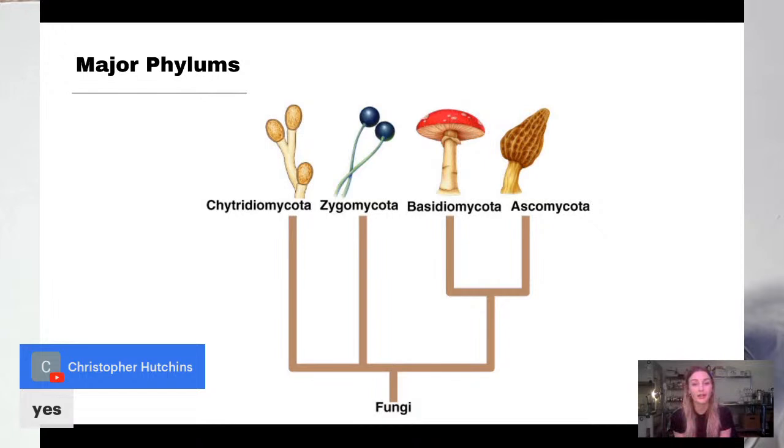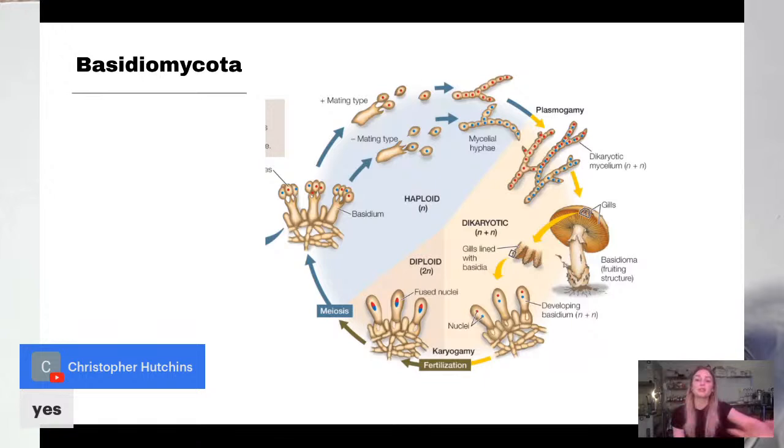Then you have the more mysterious ascomycota. If you recognize that illustration, it's a morel. Ascomycota, the asco means ascus, which is Latin for sac. In a morel, all of those little concave scoops are basically a little spore house. There's also non-mushroom-forming ascomycota, and yeasts are actually within this phylum.